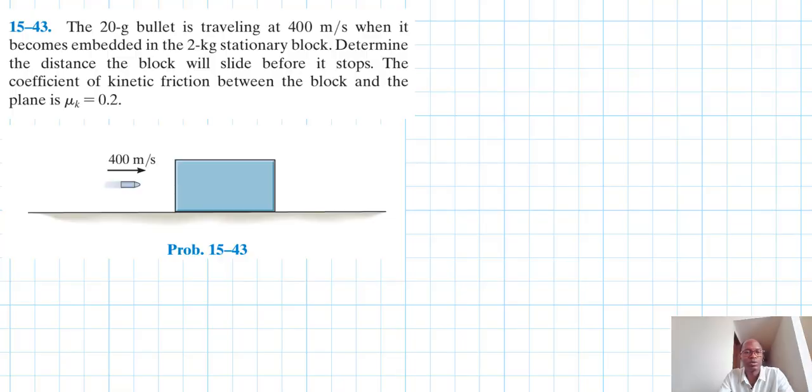Hello, I welcome you all. The problem reads that the 20 gram bullet is traveling at 400 meters per second when it becomes embedded in the 2 kg stationary block. Determine the distance the block will slide before it stops. The coefficient of kinetic friction between the block and the plane is 0.2.